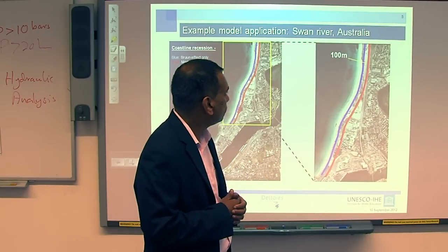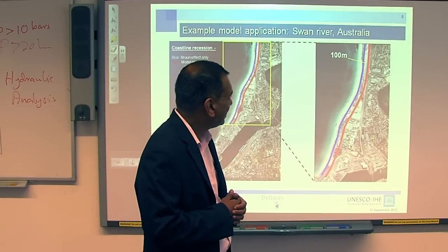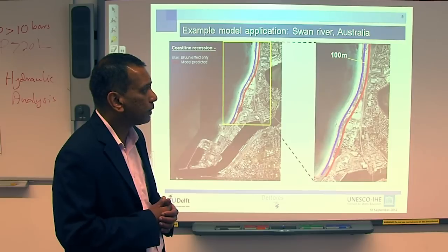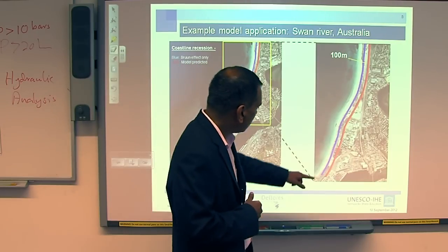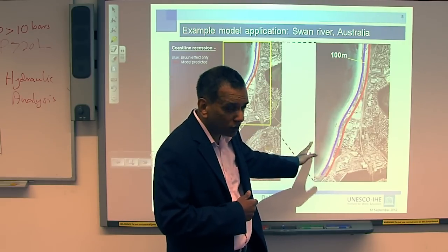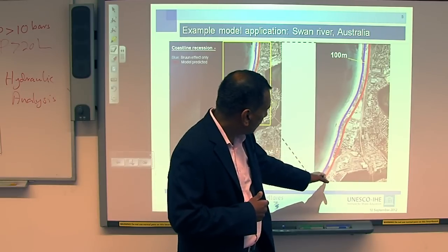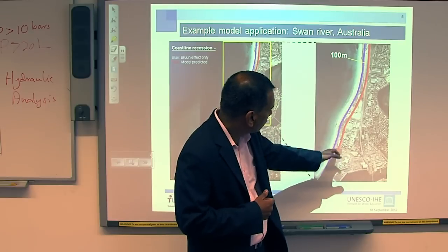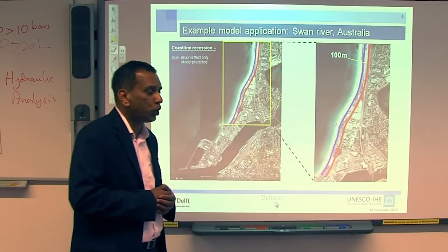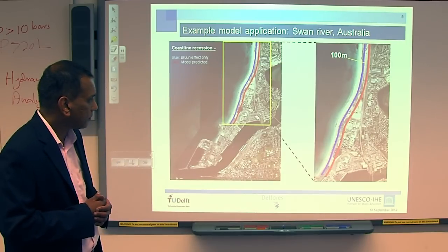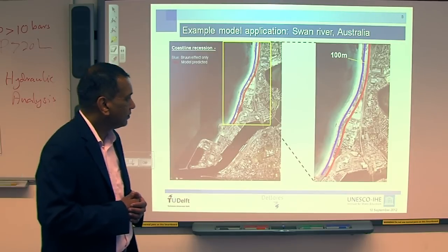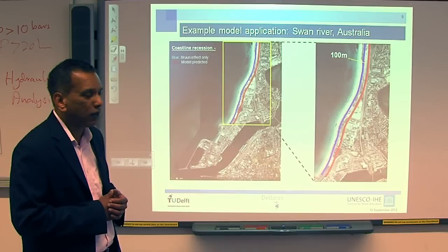The red line is about 100 meters landward of the blue line. This means if you use currently adopted methods like the Bruun effect, we will underpredict our coastline recession. That makes a significant difference: looking at the blue line, there's not much infrastructure seaward of it, but looking at the red line, there's a major highway and a lot of infrastructure that falls within the zone of threat. This means all those properties and infrastructure are under threat. If we don't make coastal zone management plans accounting for such potential damages, there can be massive losses in the future.